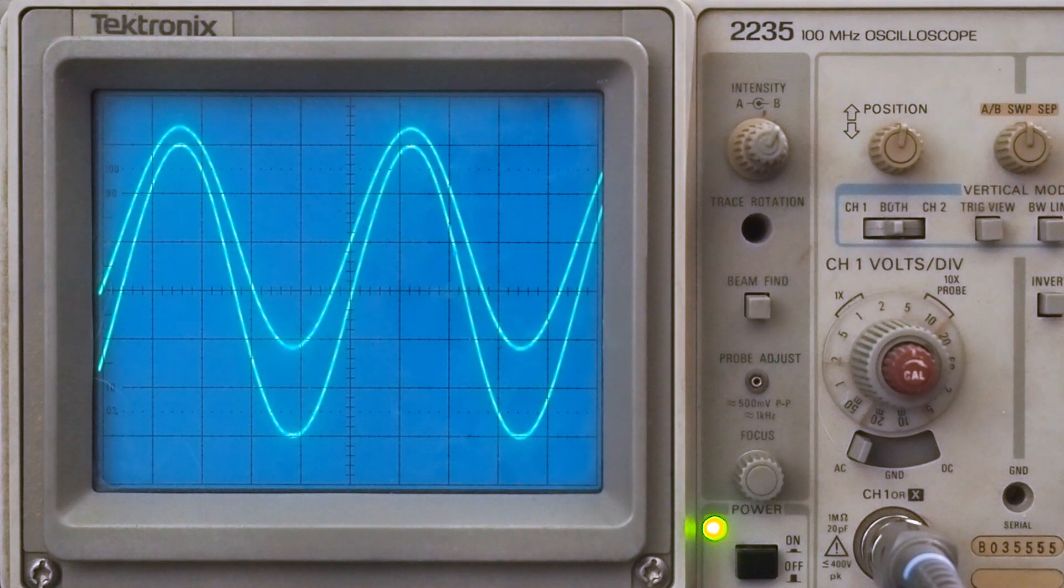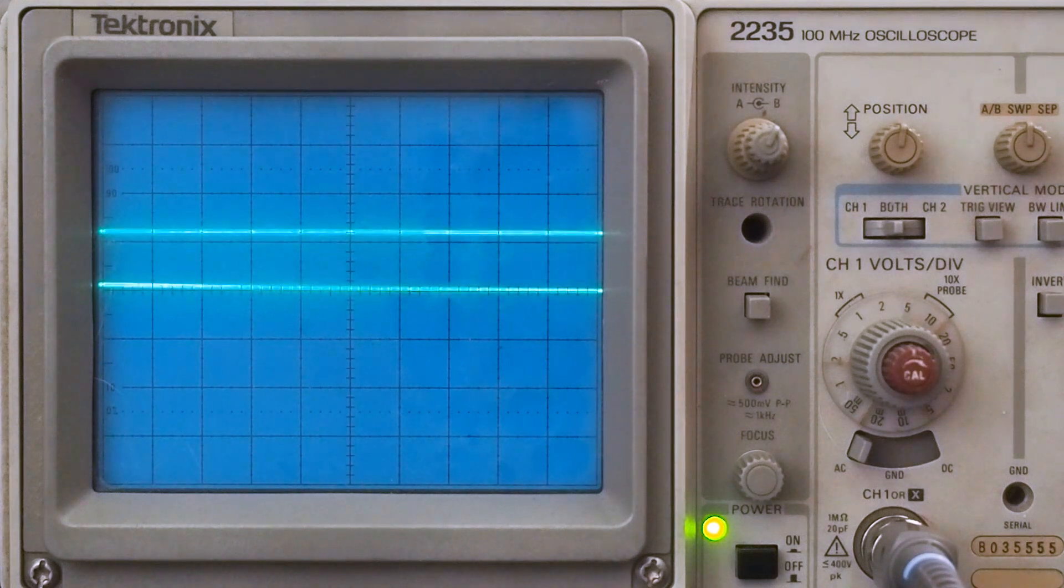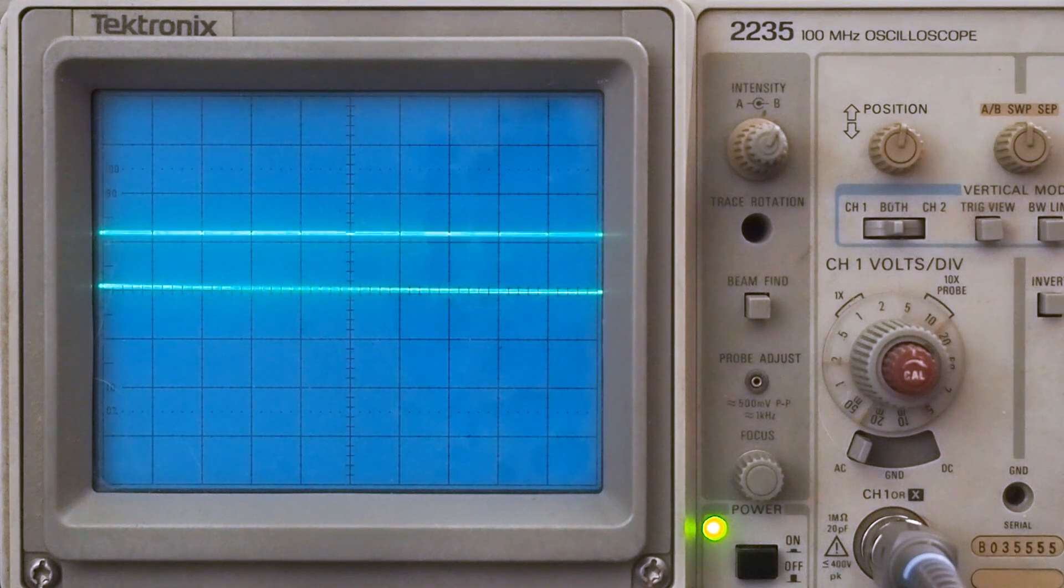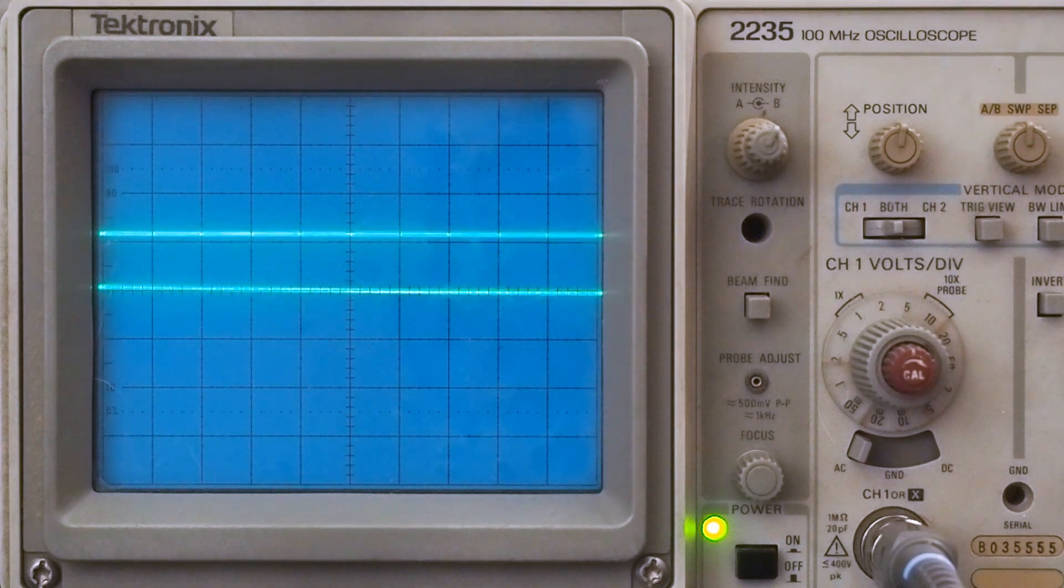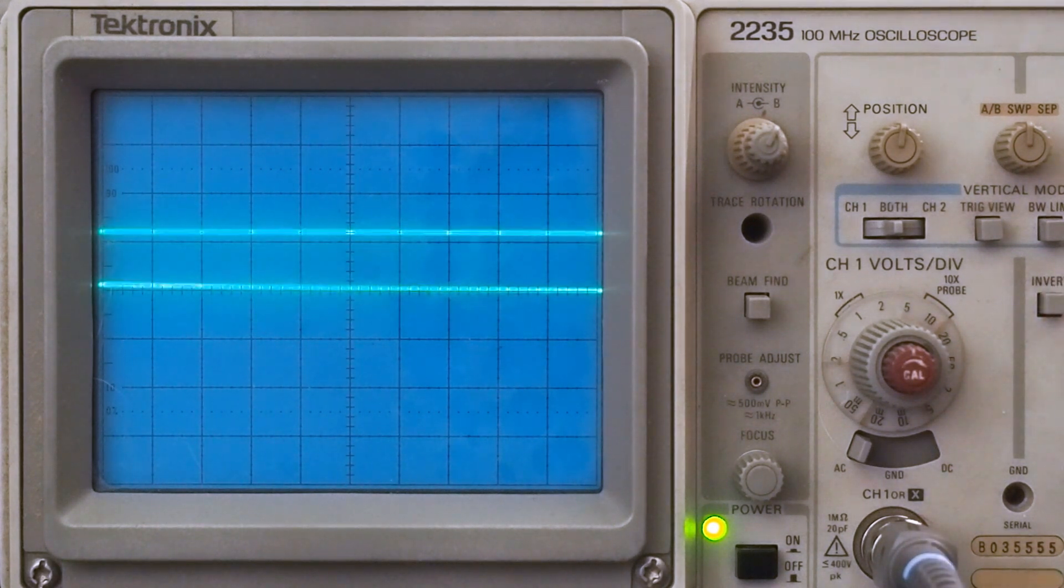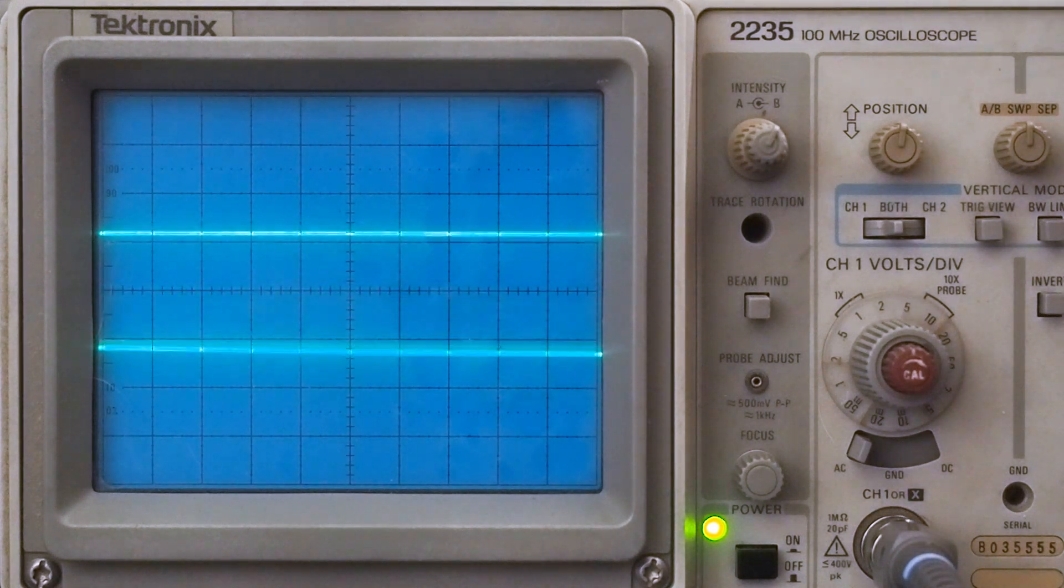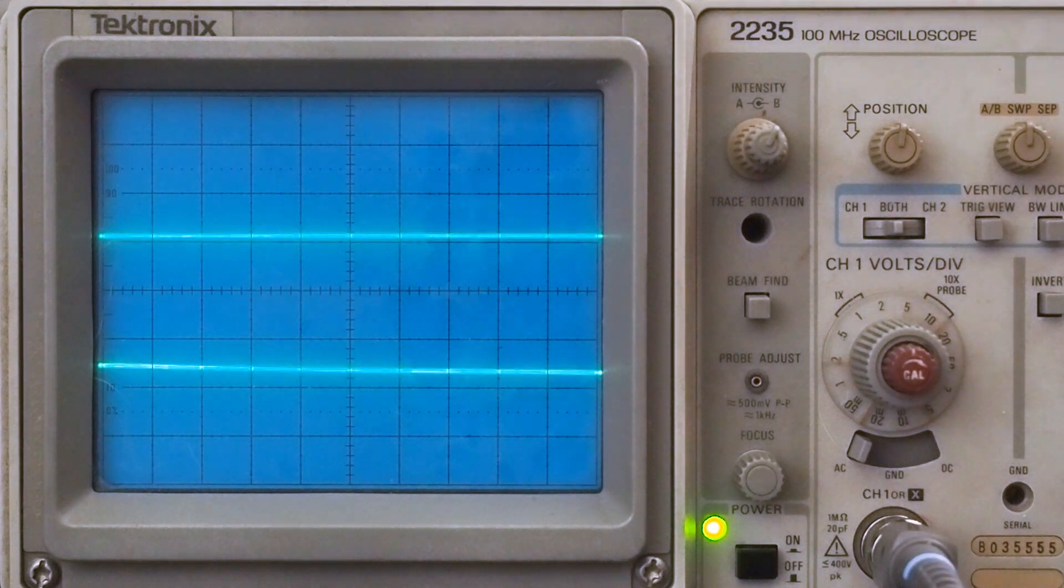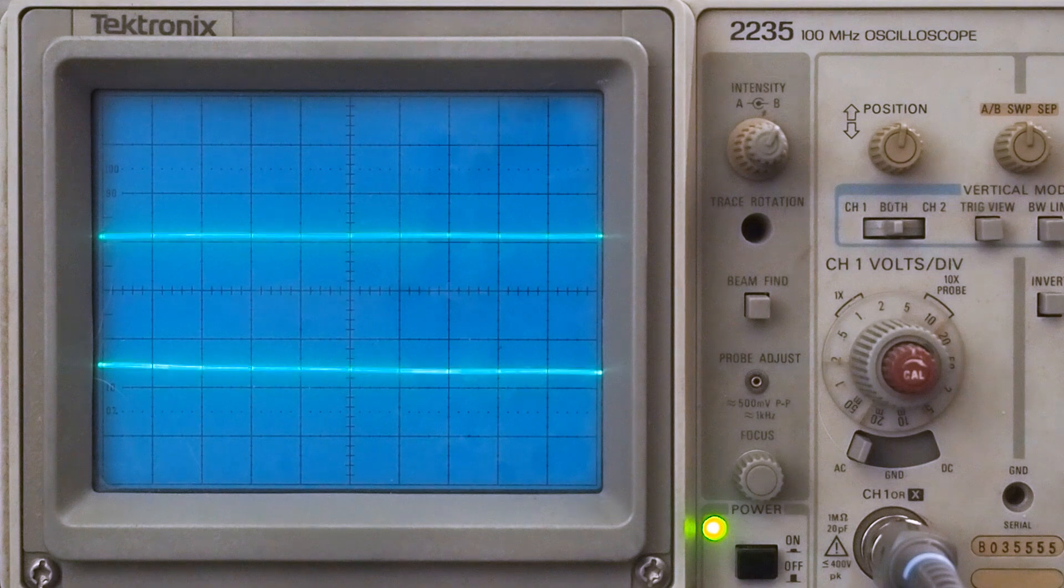So now we're going to switch the probe to the output of the transformers and see what kind of drive we're getting out of this amp on the output side. So let me switch that over real quick. Okay, now we've got the probe hooked on the speaker terminals. We've got an eight ohm load, we've got it hooked to the eight ohm taps. We're going to change channel B to two volts, move this down a little bit so it's a little easier to see. Let's put some drive in it and see what comes out of this thing.